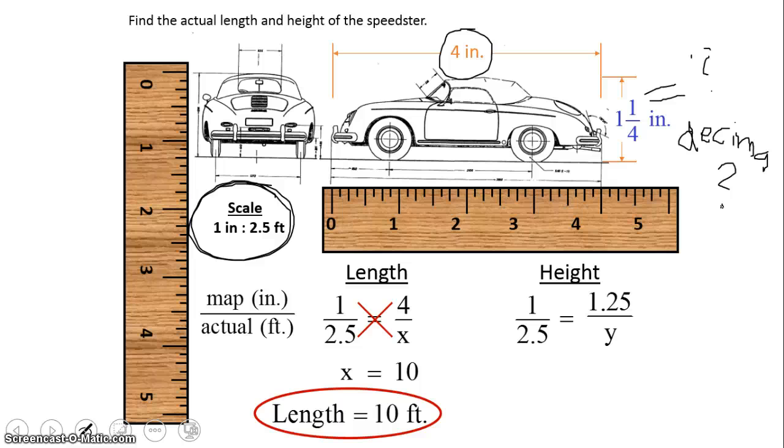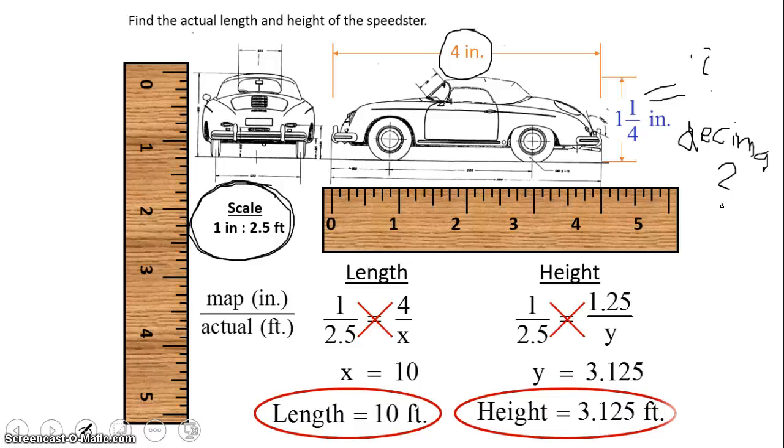We're going to do a simple cross multiplication. 1 times y is y. And we're going to cross multiply on the other side making sure that I have my equal sign. And when I multiply, I get 3.125, which means the height of the actual speedster is 3 feet, 3.125 feet. That is the same fractional amount as 3 and an eighth of a foot. So if you also had an eighth instead of the decimal equivalent, then you're also correct.